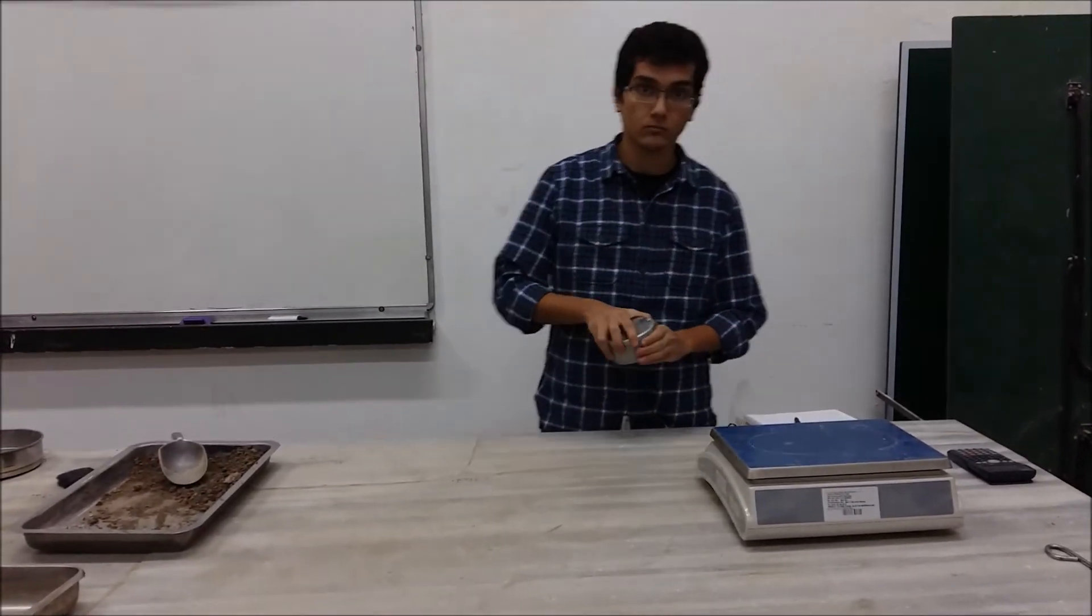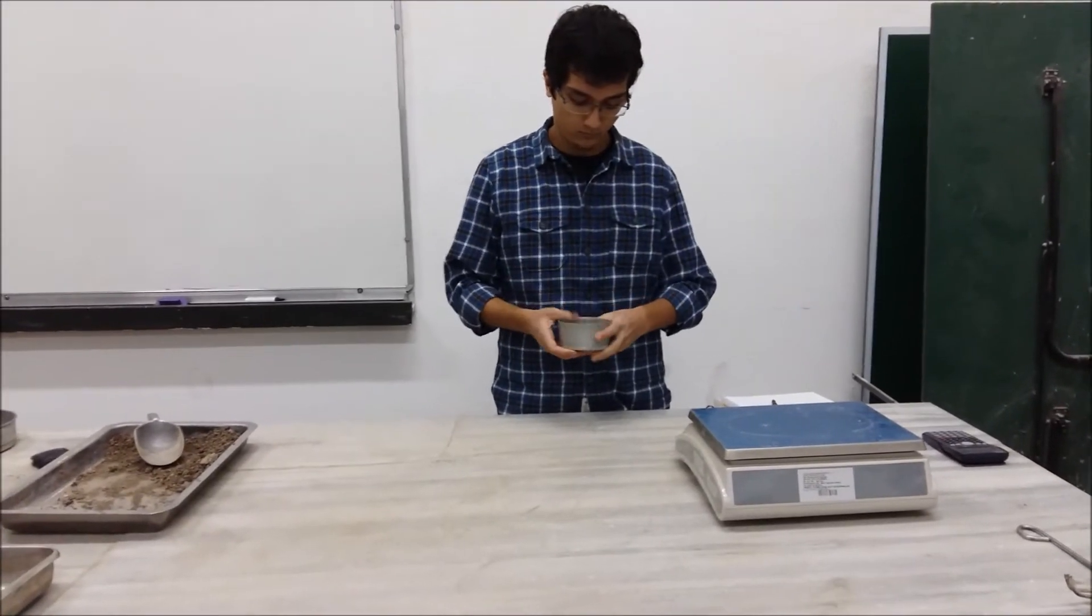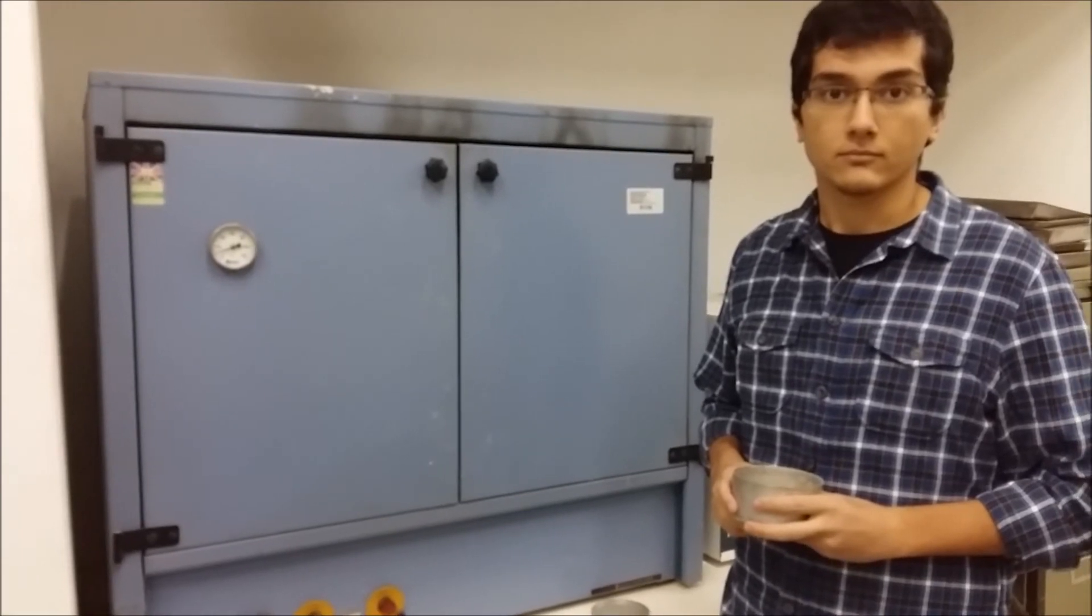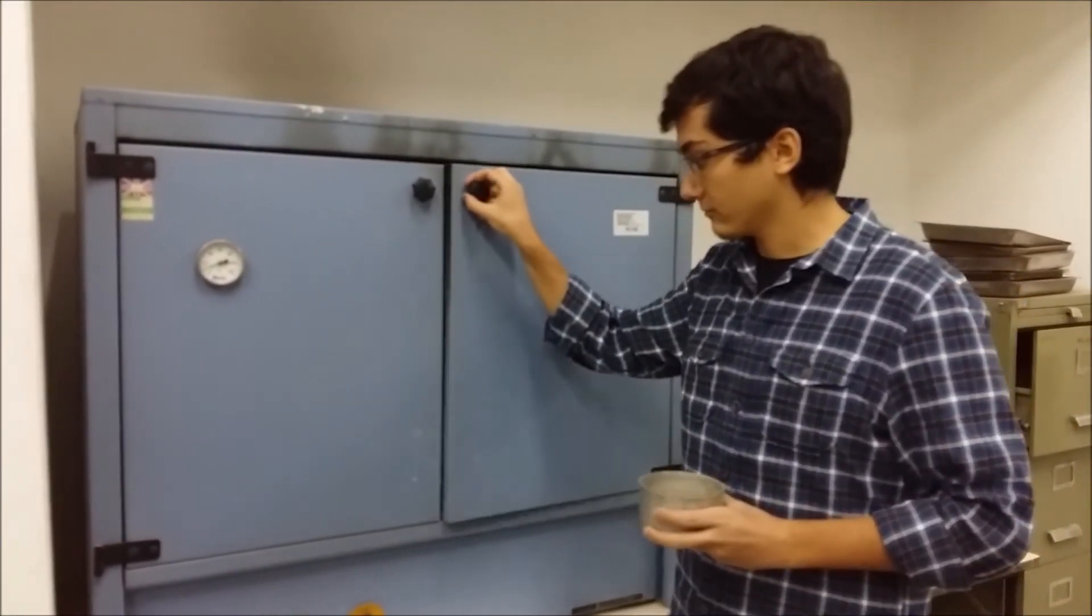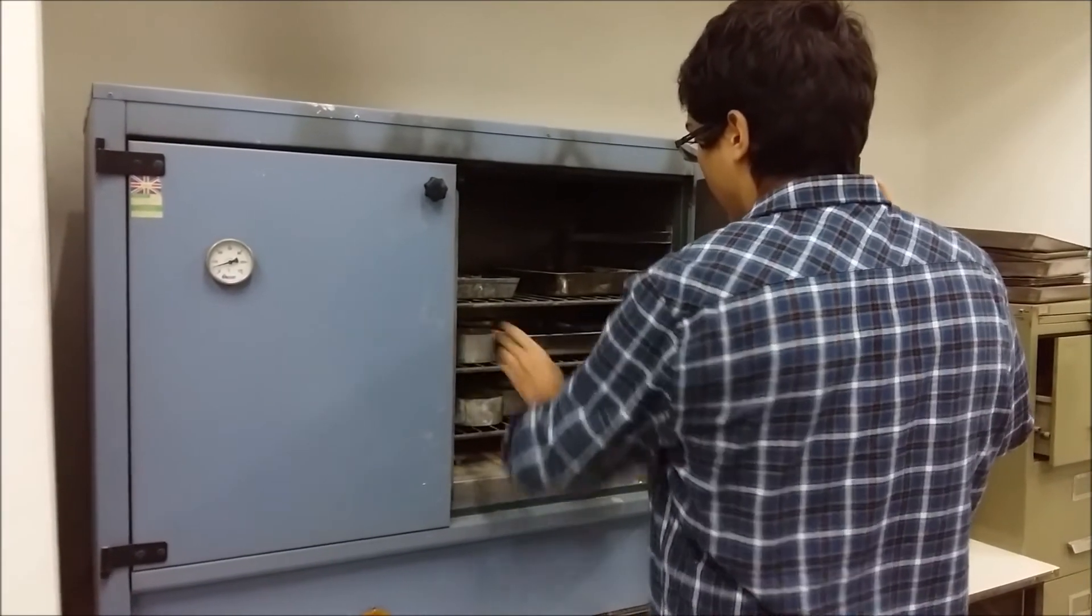Remove the cap from the top of the can and place it on the bottom. Put the can in the oven to dry the soil to a constant weight. In most cases, 24 hours of drying is enough.